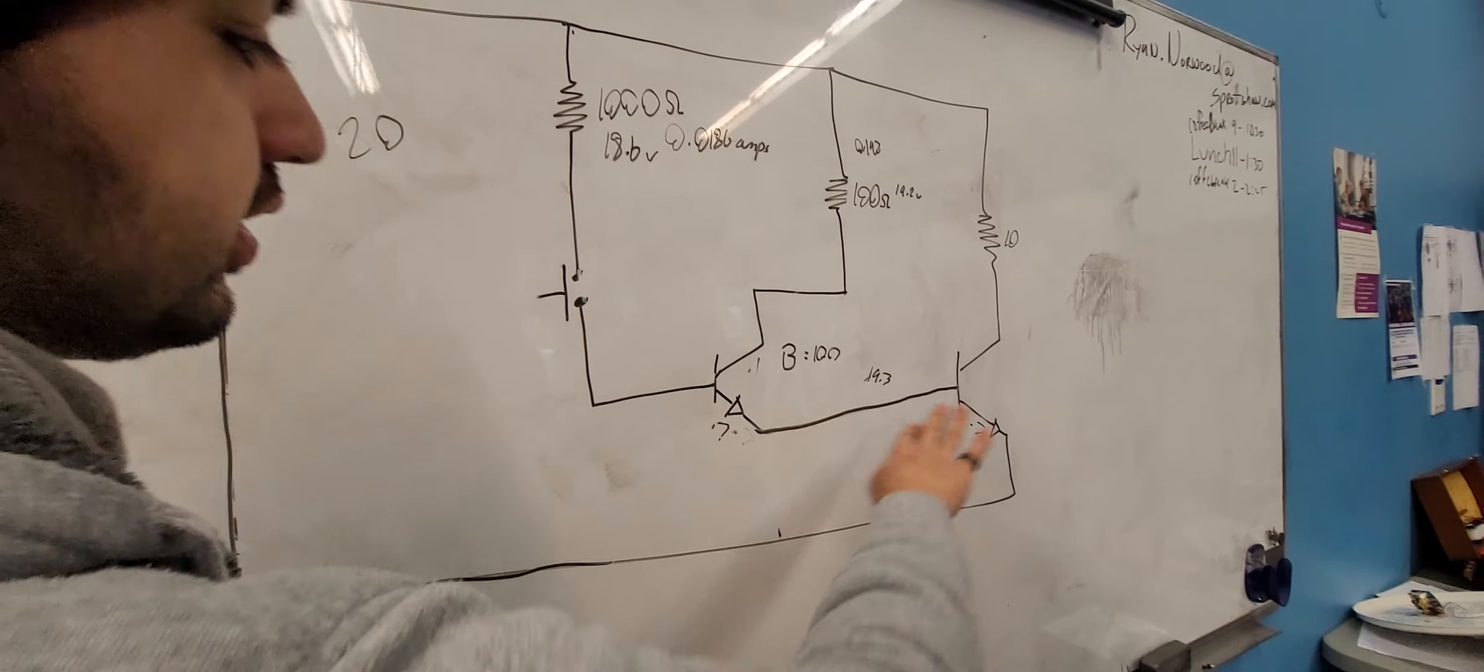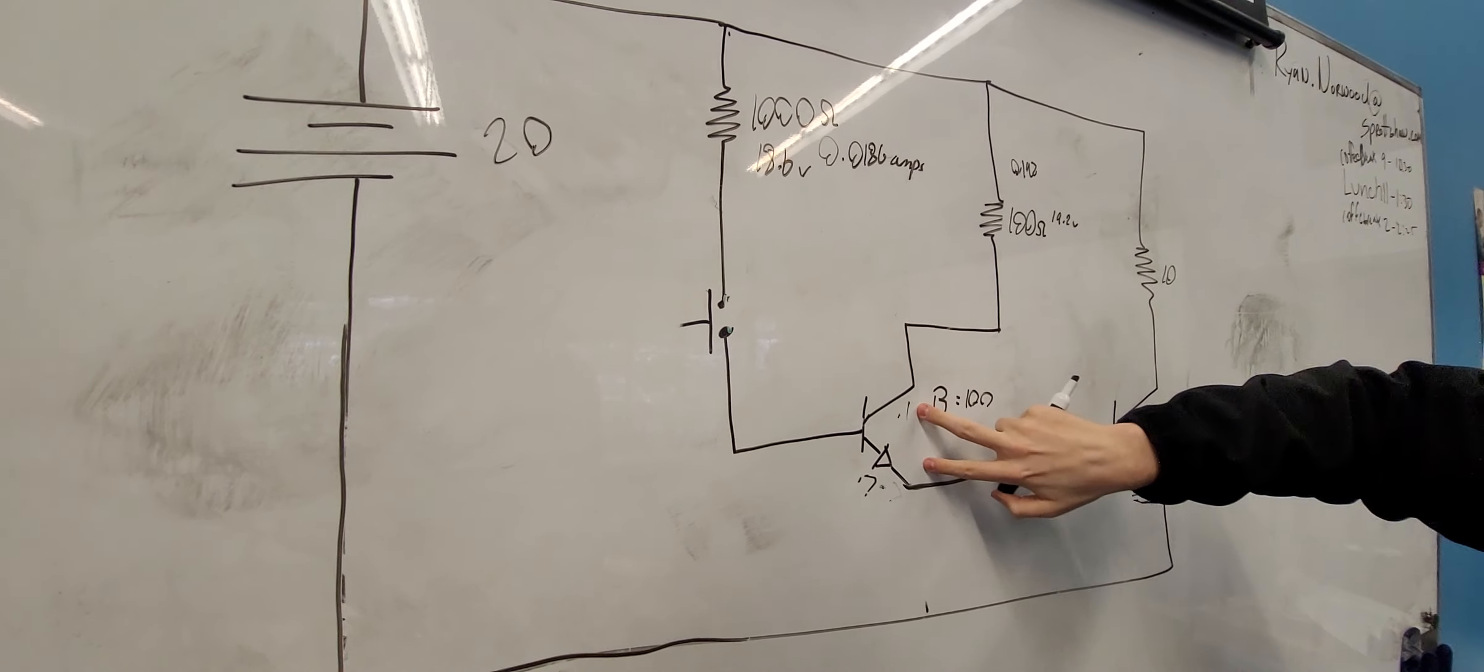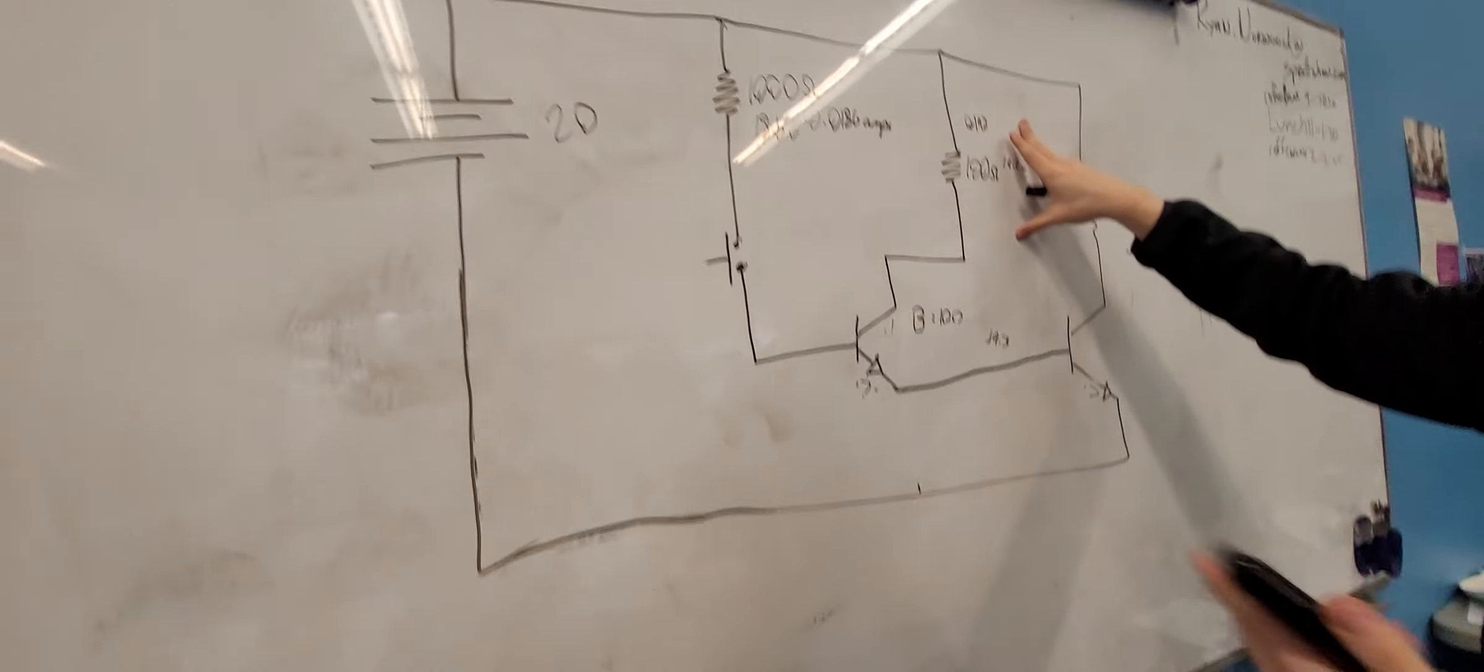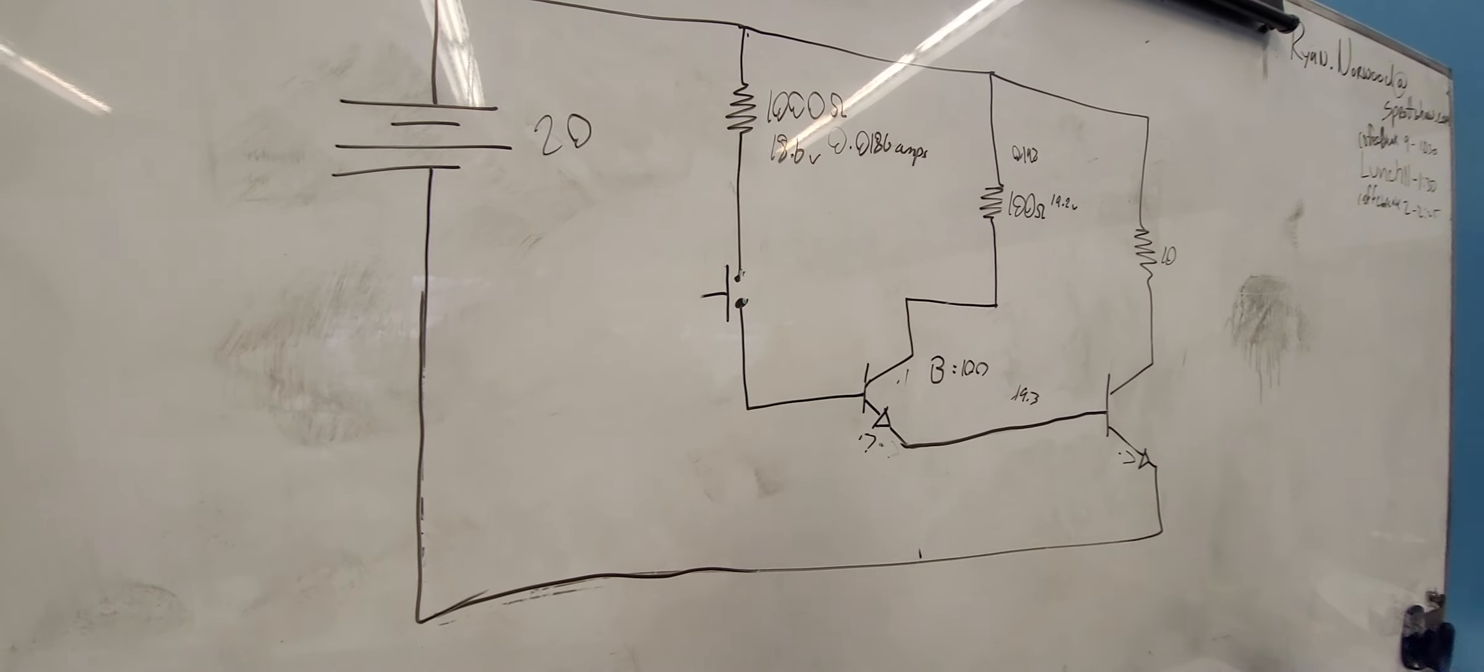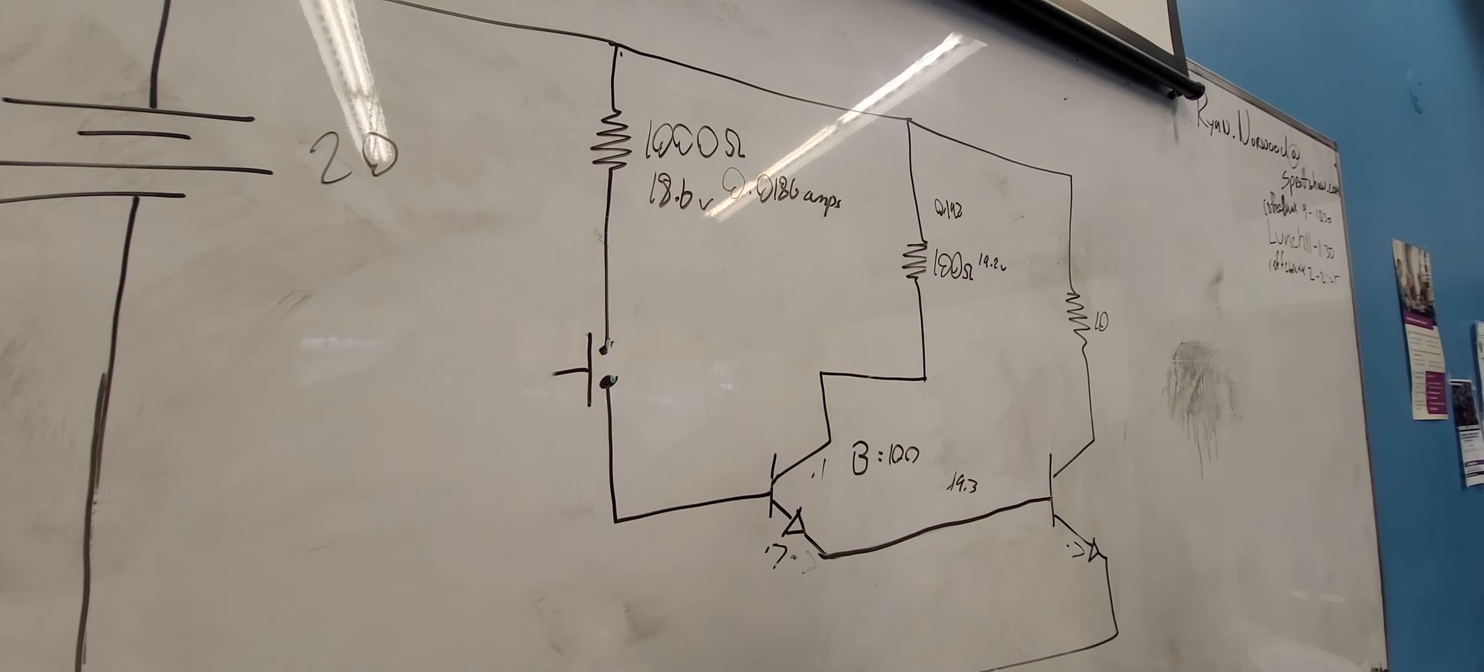But how did you get the 19.2 volts? I got it from here. So I basically am saying that you have 20, comes through this resistor, and then it's going to drop to 19.3. And then you have 19.3 coming into here. It's going to drop another 0.7. So 20 minus 0.7 minus 0.1 is going to give us 19.2. Is this how every transistor works? If it's saturated, it's going to be 0.1 this way. If it were below that point of saturation, this value is going to change.